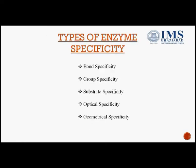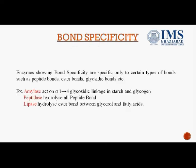Enzyme specificity can be divided into five types: bond specificity, group specificity, substrate specificity, optical specificity, and geometrical specificity. Enzymes showing bond specificity are specific to a certain type of bond, such as peptide bond, ester bond, and glycosidic bond. For example, amylase can act on the alpha 1,4 glycosidic linkage both in starch and glycogen.